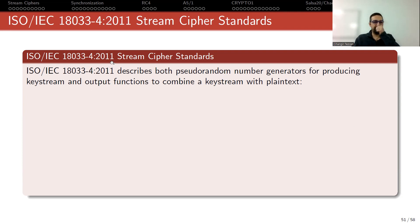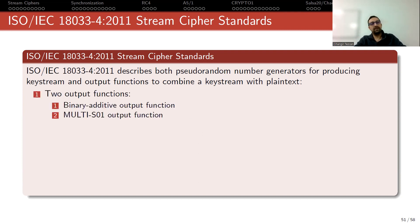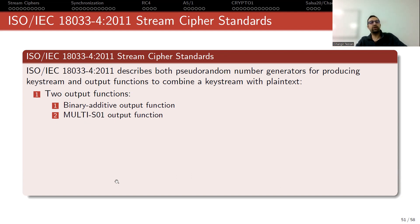In 2011, this standard described both pseudorandom number generators for producing keystream and output functions to combine a keystream with plaintext. The output function is the binary additive output function, which means you XOR the keystream with the plaintext directly, or you can use multi-S or one output function defined in this standard.